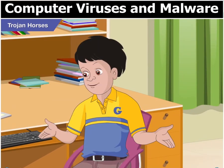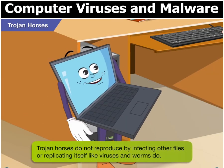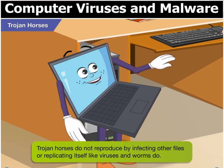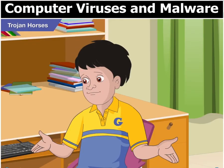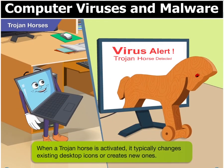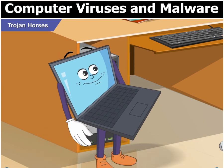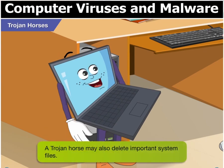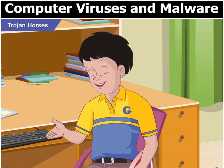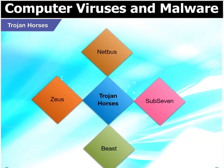Does a Trojan horse make copies of itself? No Goggle. Trojan horses do not reproduce by infecting other files or replicating itself like viruses and worms do. Then how does it function? When a Trojan horse is activated, it replaces existing desktop icons or creates new ones. It may also delete important system files from your computer. Can you name some Trojan horses? Some examples are Netbus, Sub7, Beast, and Zeus.